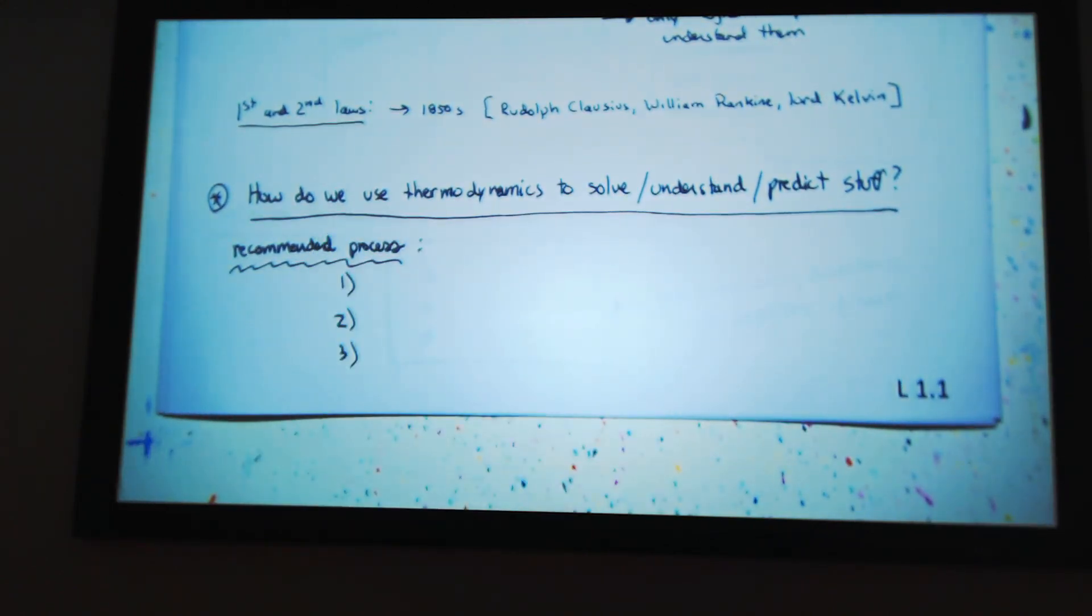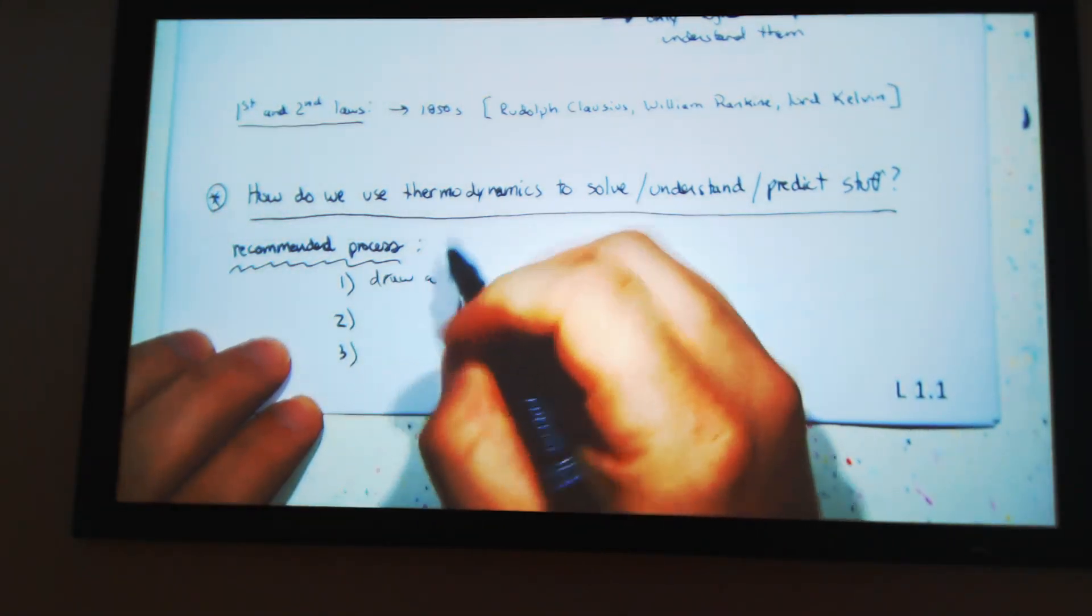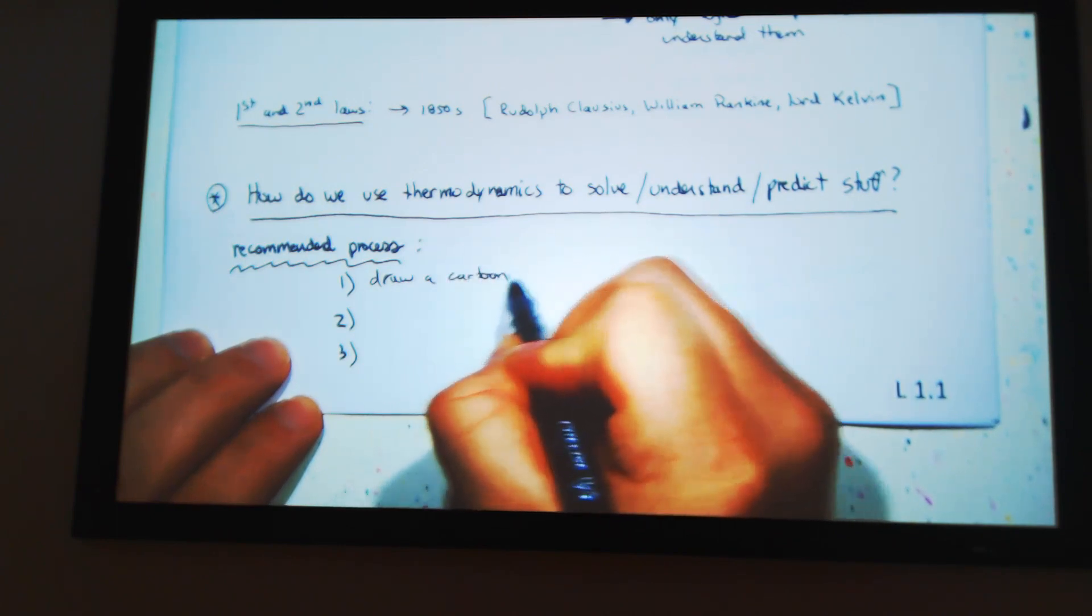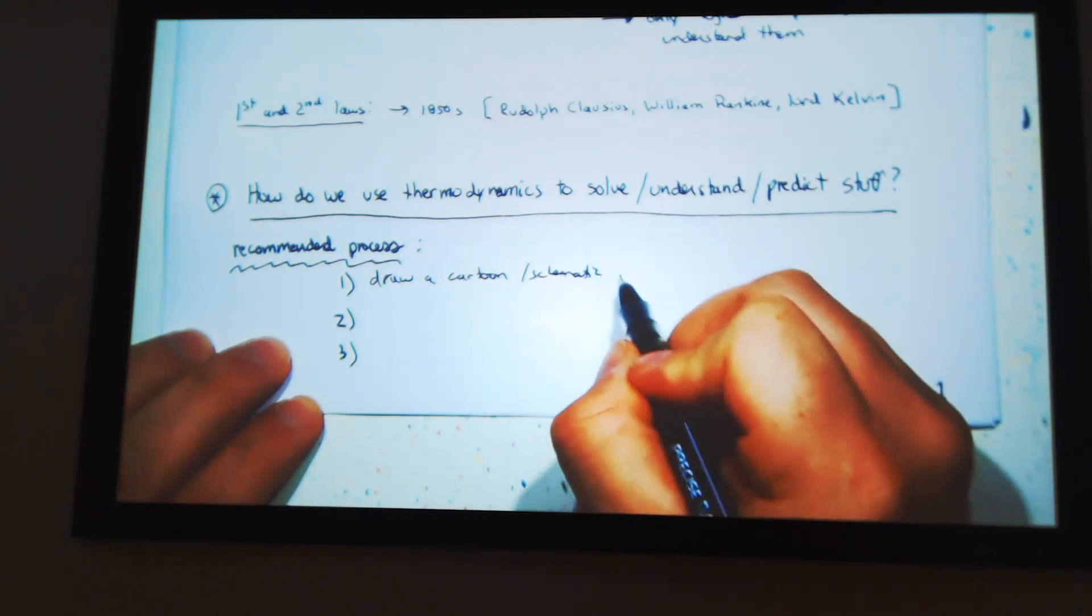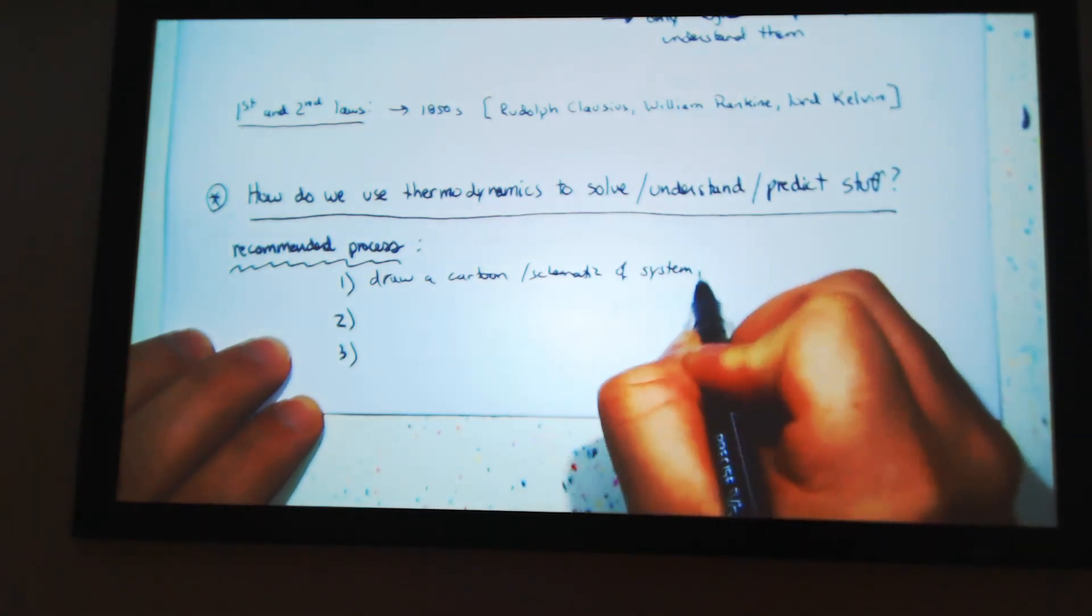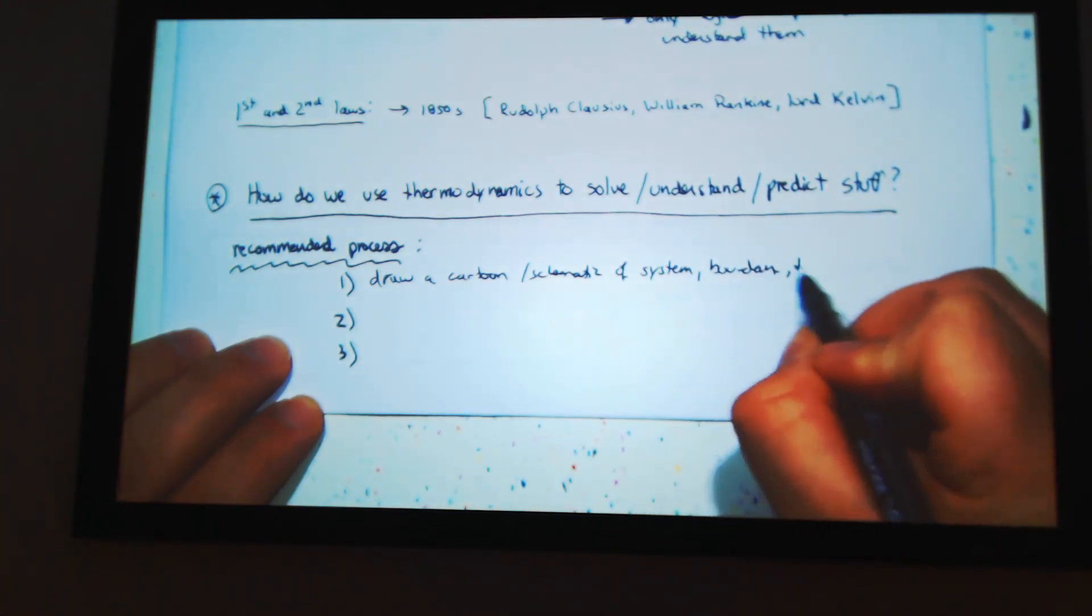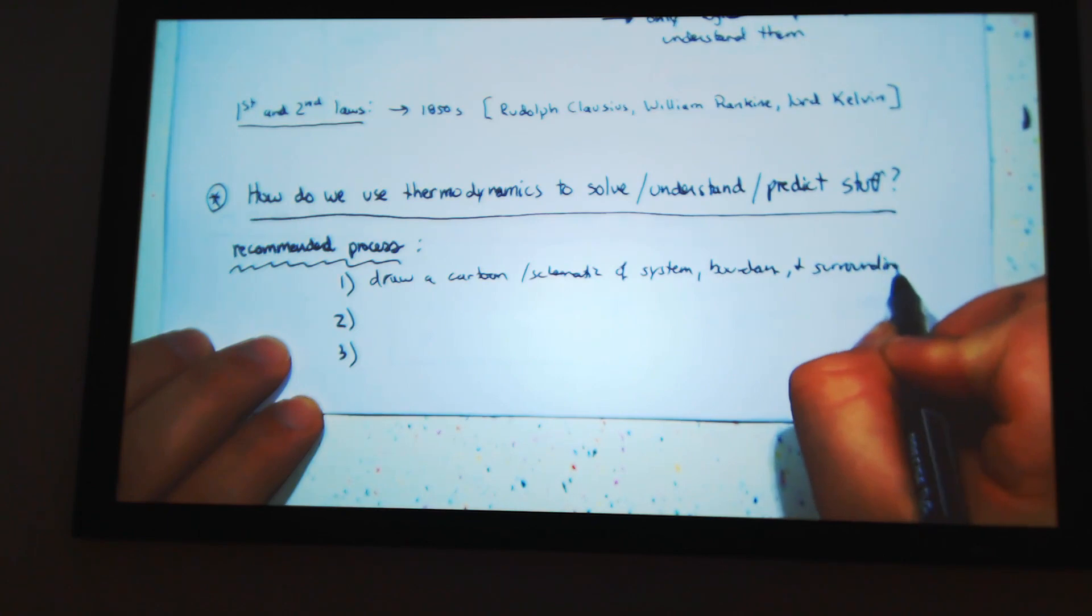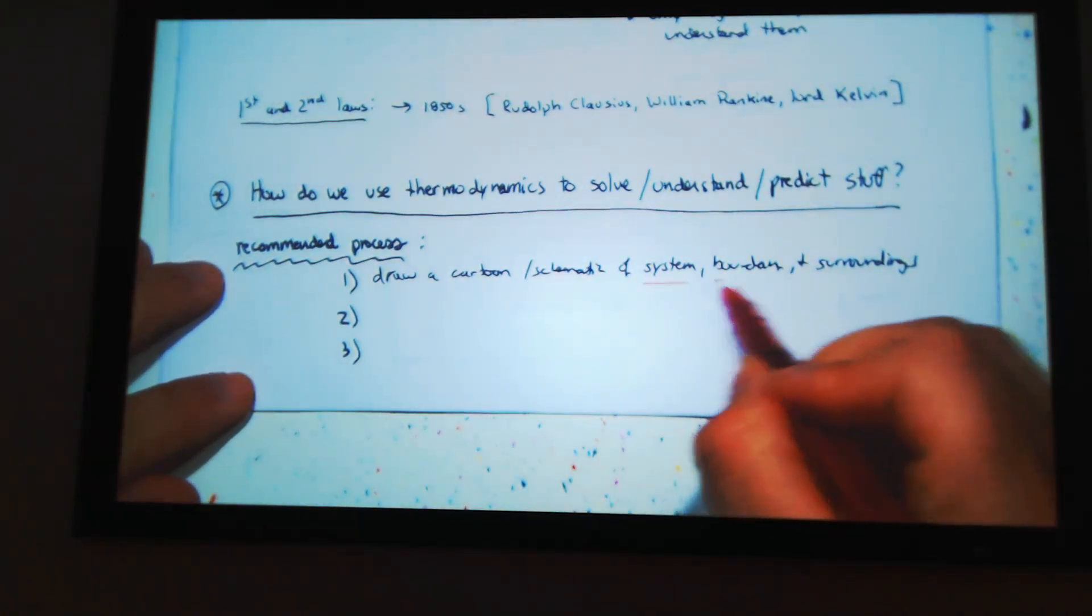How do we use thermodynamics to solve, understand, and predict stuff? So this is my recommended process. Nothing profound, just basic stuff. It's just draw a cartoon slash schematic of the system, boundary, and surroundings. So you draw a cartoon: system, boundary, and surroundings.